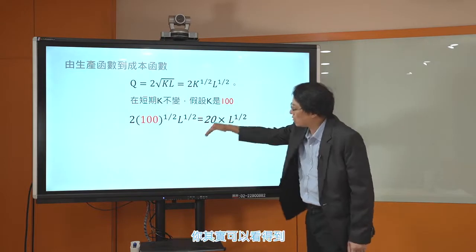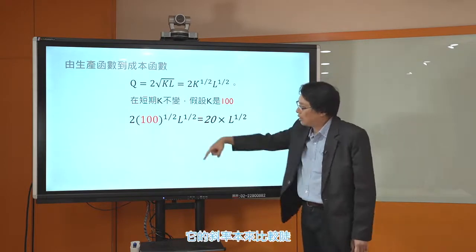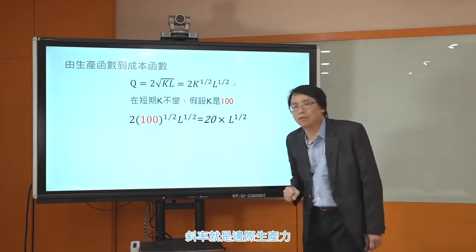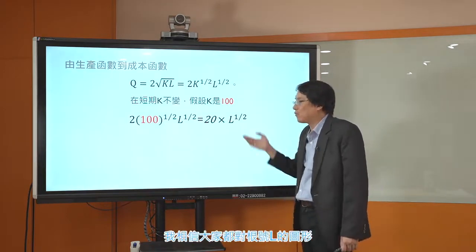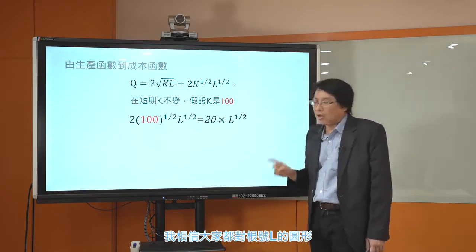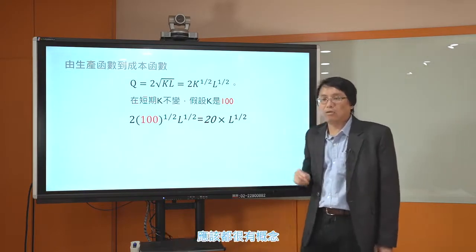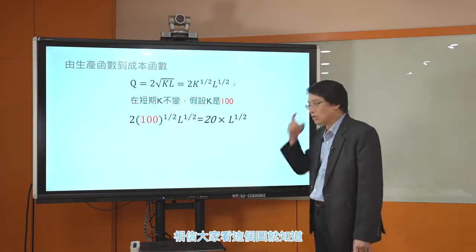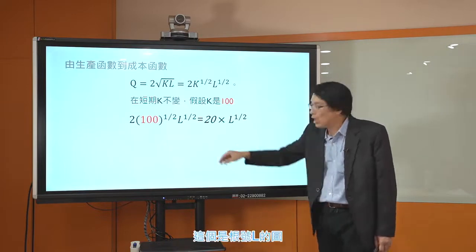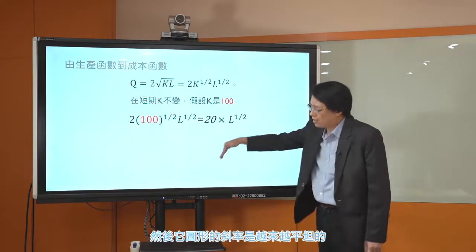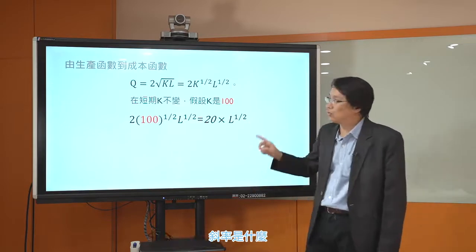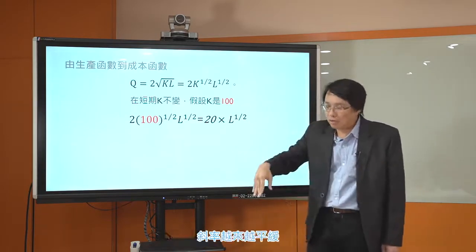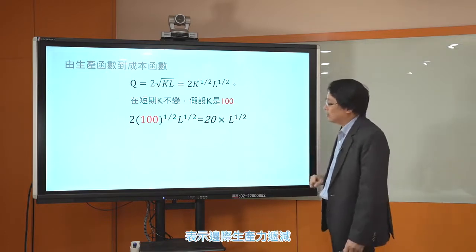短期的时候你能够决定产量只有透过调整劳动投入。Q等于20根号L，这个函数会有边际生产力递减的现象。生产函数的样子是越来越平滑的曲线，斜率本来比较陡后来会变得比较平坦。斜率就是边际生产力，所以边际生产力本来比较大后来越来越小，这就是边际生产力递减。